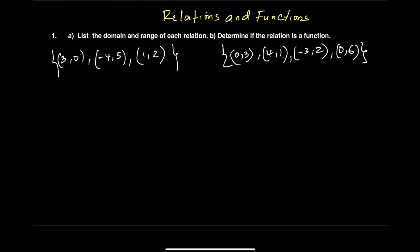A relation is simply a group of ordered pairs that show how input values are connected to output values. Here, we're looking at two sets of ordered pairs. In each pair, the X value is the input, and the Y value is the output. The X values together make up the domain, while the Y values form the range.